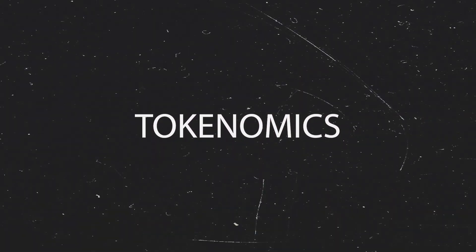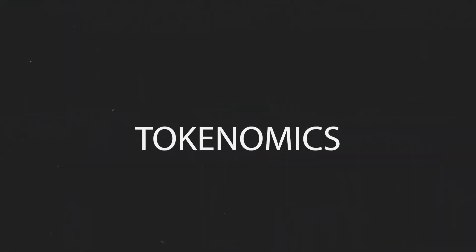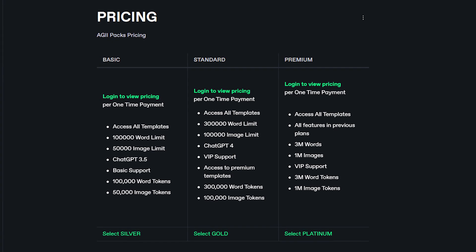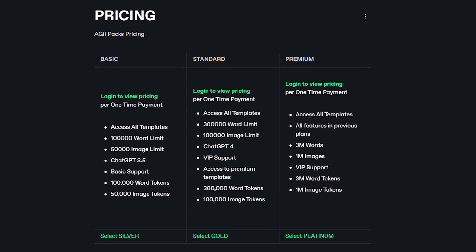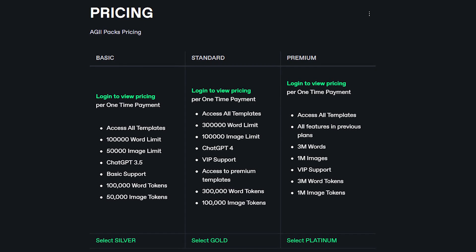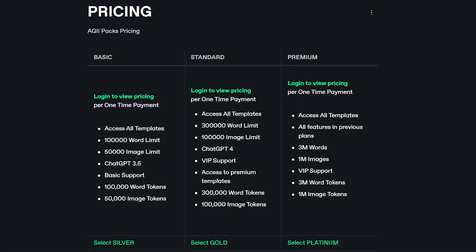Regarding the project tokenomics, all payments for ADII products and services are made using the ADII token. ADII supports secure cryptocurrency payment processing methods, as well as traditional payment channels such as credit cards, debit cards, and electronic payment gateways such as Stripe and PayPal. This ensures safe and secure transactions for both users and businesses, as well as greater accessibility.